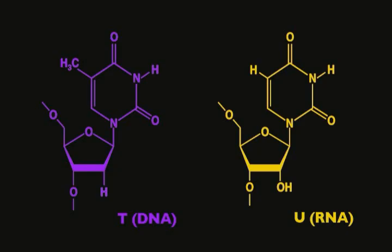Another distinction between DNA and RNA is, as you would guess from the term deoxyribose nucleic acid, that there is a missing oxygen in DNA. So RNA has an extra oxygen atom on each of the sugars of the repeating units.